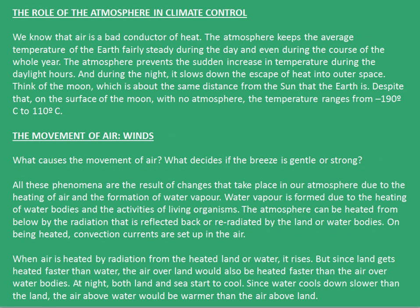Now let's see the role of atmosphere in climate control. Air is a bad conductor of heat. The atmosphere keeps the average temperature of the Earth fairly steady during the day and over the whole year. It prevents sudden increases in temperature during daylight hours, and during the night it slows down the escape of heat into outer space. Consider the Moon, which is about the same distance from the Sun as Earth. Despite this, the Moon's surface — which has no atmosphere — ranges from minus 190°C to around 110°C. This shows how important the atmosphere is in climate control.